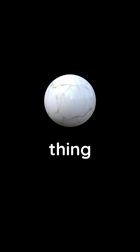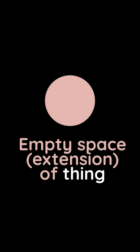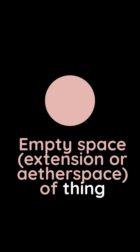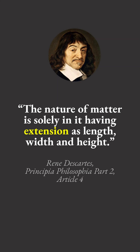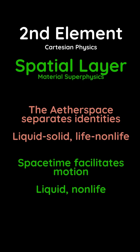In Cartesian physics, a thing is made up of atoms, which is mostly empty space that is different from the space outside it. This internal space is called extension, which we call the ether space. The nature of matter is solely in it having extension as length, width, and height. This is different from the external space called spacetime. These two spaces are part of the second element, which we call the spatial layer.